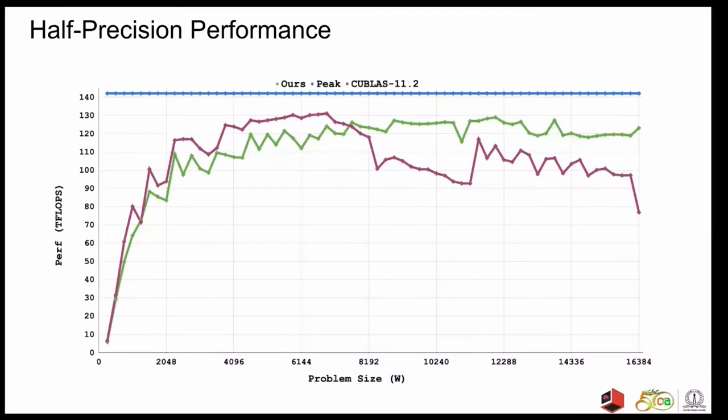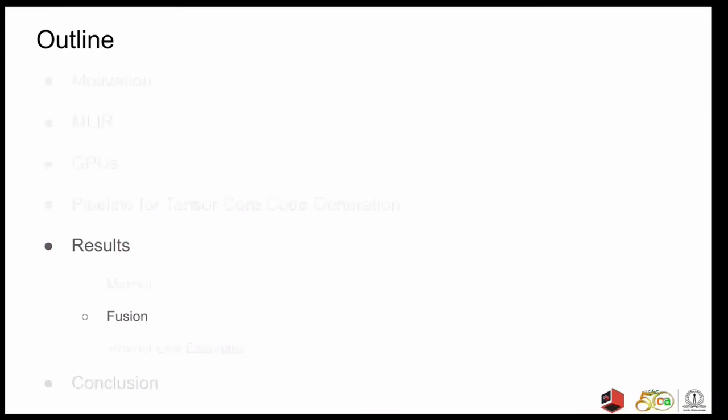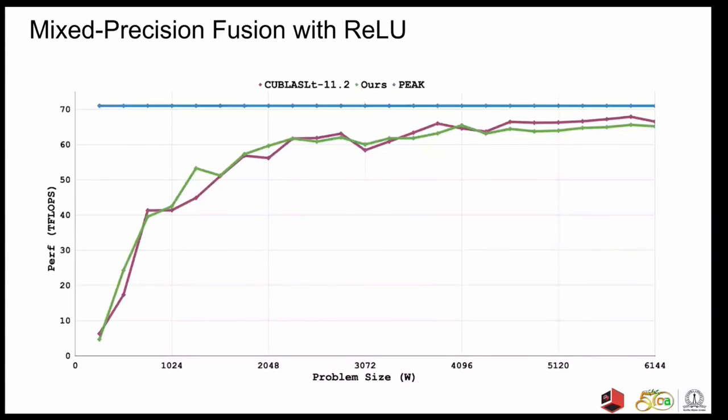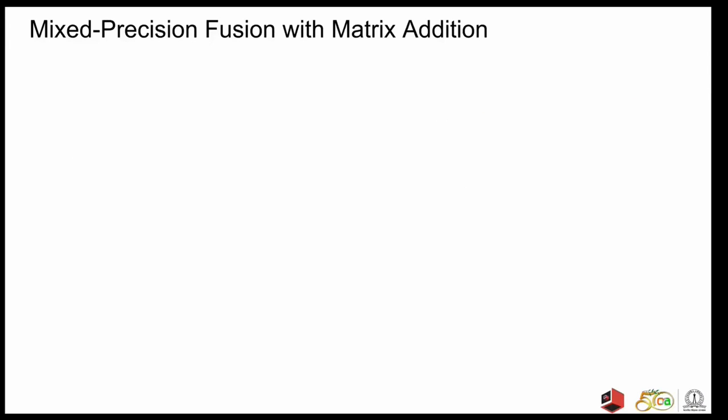Now we will move on to the performance results of some fused kernels. So this is the performance plot for fused ReLU. Matrix matrix multiplication followed by ReLU on the output. The comparison here is with cuBLAS LT which is also an NVIDIA provided library and contains the fused implementation for ReLU. The performance for both of the frameworks is almost identical here.